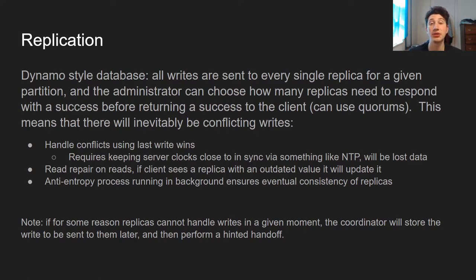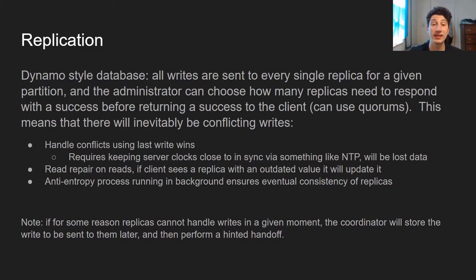Cassandra has a ton of options for this. You can either just hit any one node, hit a quorum of nodes but only in your local data center, or hit an actual global quorum of nodes — there are a bunch of options. You can configure that to get the consistency level you want. Additionally, just by virtue of being a multi-leader replication setup, there are going to be conflicting writes. So how do we handle those? We use last write wins.